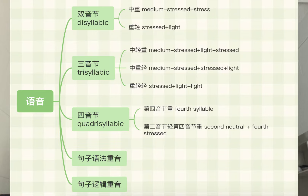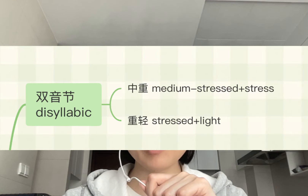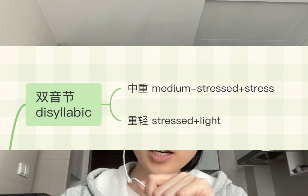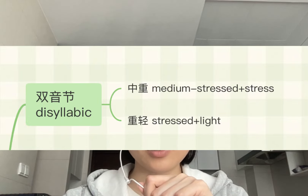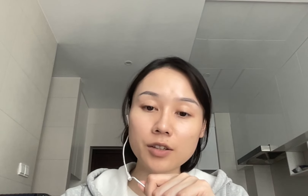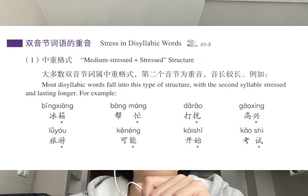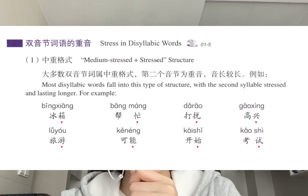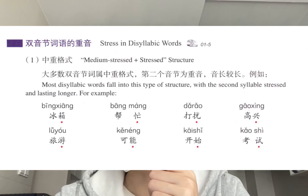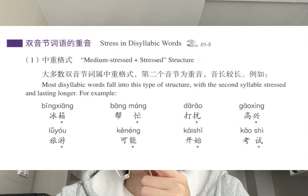Let's start by examining how we determine stress within words. For disyllabic words, we divide two syllables into median stressed and stressed positions. Disyllabic words are the most common type in Mandarin, so pay attention. You can follow along with me: 冰箱、帮忙、打扰、高兴、旅游、可能、开始、考试.